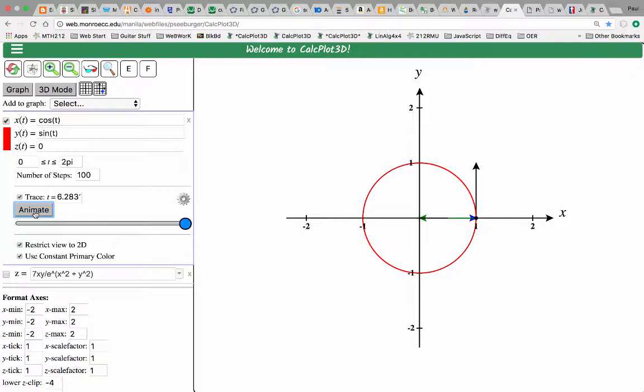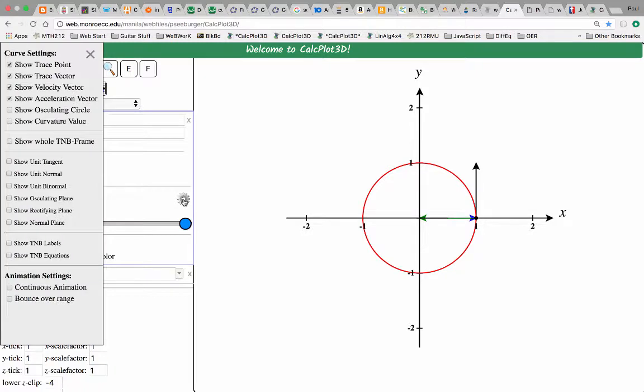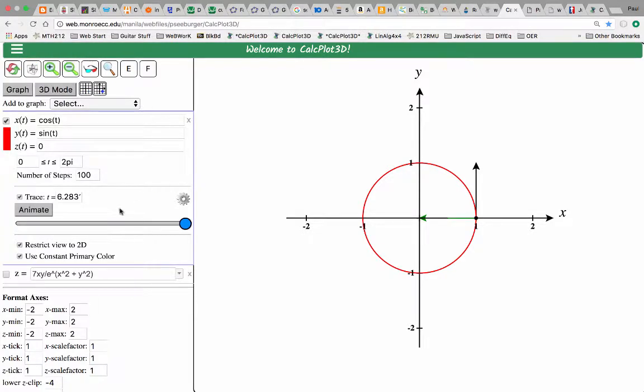Now in this particular parameterization, the acceleration is right on top of the trace vector, so it might make sense for us to hide the trace vector. And then you can just see the relationship between the acceleration and velocity in this particular parameterization of the circle.